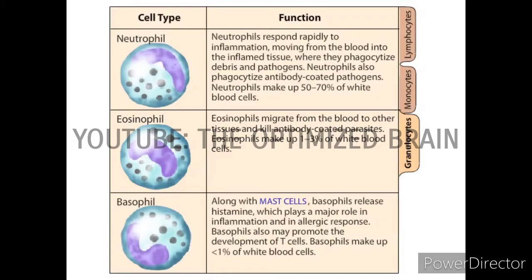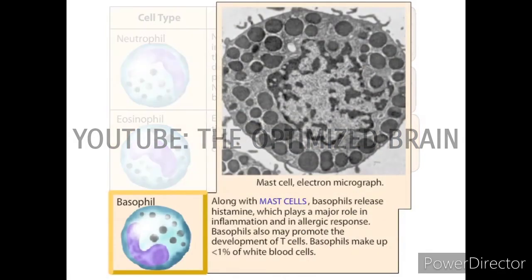Along with mast cells, basophils release histamine, which plays a major role in inflammation and an allergic response. Basophils also may promote the development of T cells. Basophils make up less than 1 percent of white blood cells.